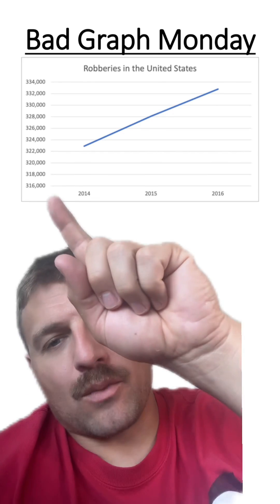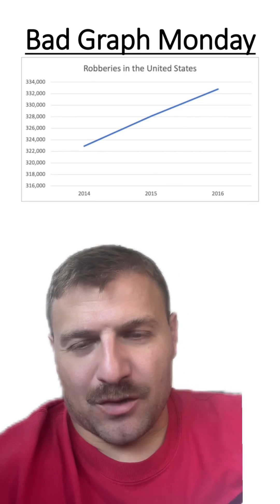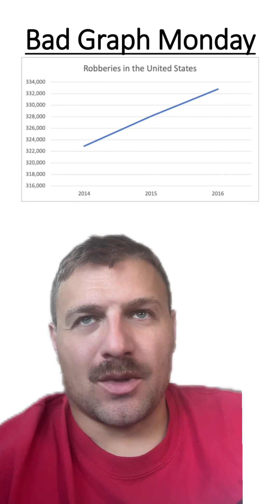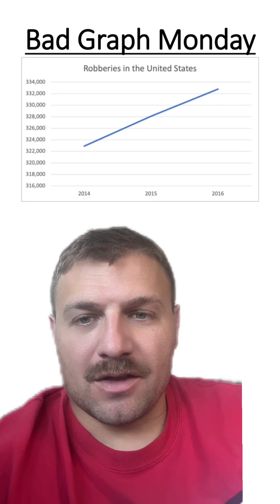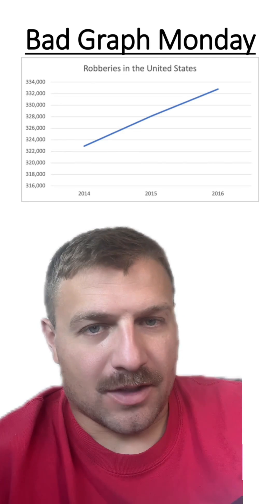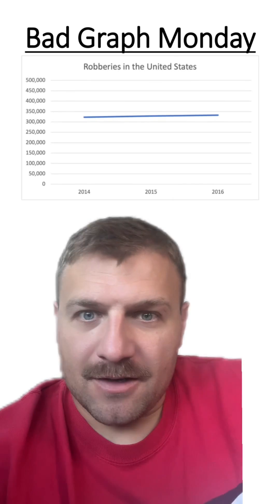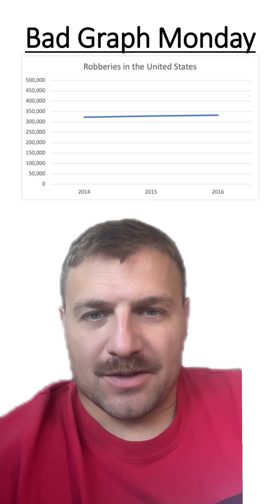You might have already spotted the problem here — we're not starting out with zero on our y-axis. In fact, we're starting at over 300,000. The problem is when you do this, it makes the line graph look like there's a huge increase in the amount of robberies. But if you start the y-axis at zero, you'll notice that yes, there still is an increase — however, it's not as drastic as it was first represented.